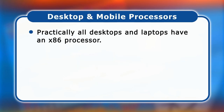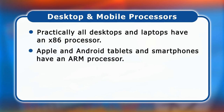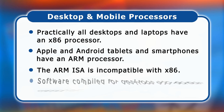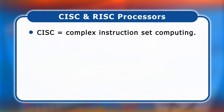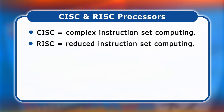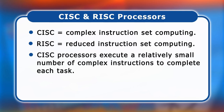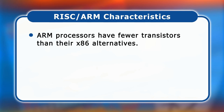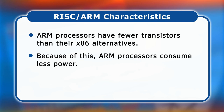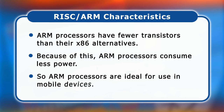While practically all desktops and laptops have an x86 processor, most smartphones and tablets have an ARM processor. These have an ARM instruction set architecture which is incompatible with x86, meaning software compiled for traditional PCs cannot directly run on Apple and Android mobile devices, and vice versa. All processors can have an architecture that is either CISC — complex instruction set computing — or RISC — reduced instruction set computing. CISC processors execute fewer complex instructions per task, while RISC processors execute many simpler ones, allowing ARM and other RISC processors to have fewer transistors, consuming less power, making them ideal for mobile devices.